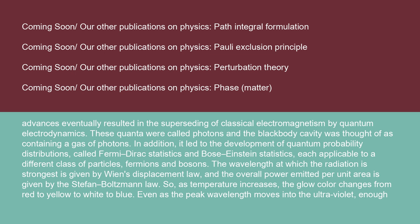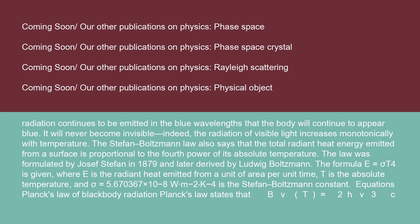The wavelength at which the radiation is strongest is given by Wien's displacement law, and the overall power emitted per unit area is given by the Stefan-Boltzmann Law. As temperature increases, the glow color changes from red to yellow to white to blue. Even as the peak wavelength moves into the ultraviolet, enough radiation continues to be emitted in the blue wavelengths that the body will continue to appear blue — it will never become invisible. Indeed, the radiation of visible light increases monotonically with temperature.